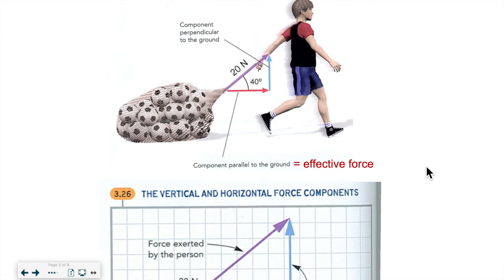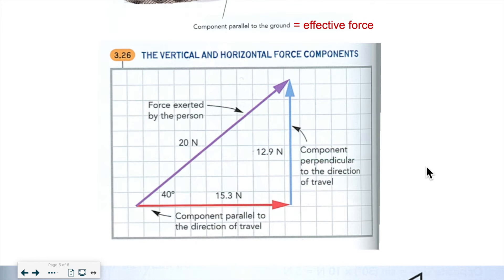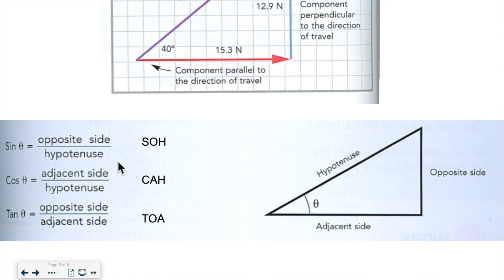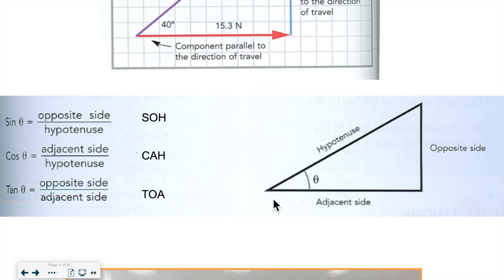We're going to use trigonometry to work through these problems. Here's a sketch of the situation: the boy was pulling at an angle of 40 degrees with a force of 20 newtons. Using trigonometry, we can use cosine of 40 to get the horizontal component and sine of 40 to get the vertical component. Note that 15 plus 12 does not equal 20 — that's not how trigonometry works. When an object is being dragged along the floor, we'll be using cosine, though there are cases where that changes.